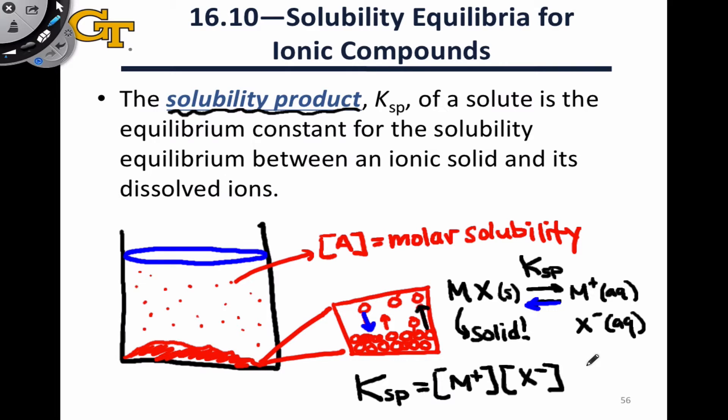So, for example, we can build an ICE table. We can go from the molar solubility, which in fact tells us these equilibrium concentrations, M plus and X minus, back to the Ksp. On the other hand, we can go from Ksp back to the molar solubility by applying the equilibrium expression, and we'll see that in some example problems.